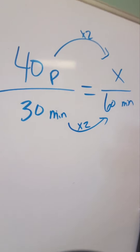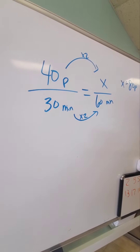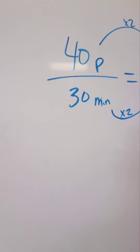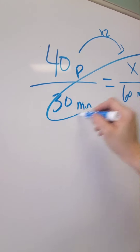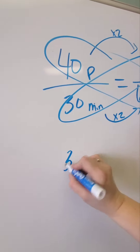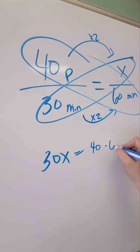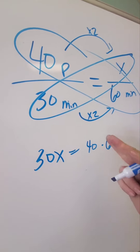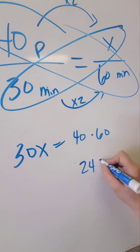I know that 80 is the answer — x equals 80 problems. But what I wanted to show you is how you can solve it if you don't know that, because sometimes these numbers don't correlate. So this is equal with this: 30x is equal to 40 times 60. And 4 times 6 is 24, so 40 times 60 is 2,400.